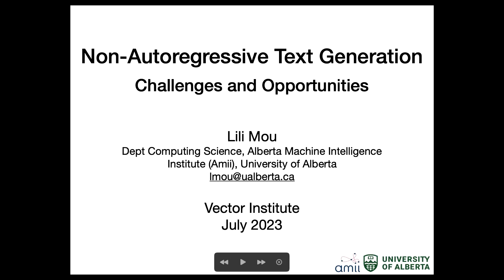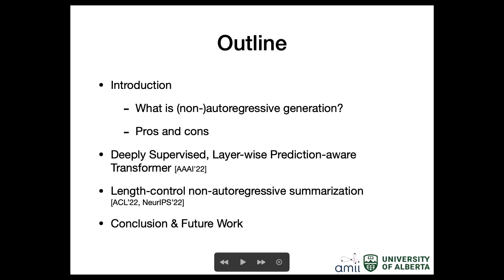For today, the topic is non-autoregressive text generation. I'm going to introduce what it is and why we care about the problem. Then we'll cover designs to improve the performance of non-autoregressive models. We also find that non-autoregressive models bring unique opportunities for controlled text generation — I'll show recent papers on length control for non-autoregressive generation, and finally the conclusion.